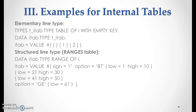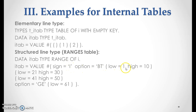Continuing with the VALUE operator for ranges table: ITAB = VALUE #( sign = 'I' option = 'BT' ( low = 1 high = 10 ) ( low = 21 high = 30 ) ( sign = 'I' option = 'GE' low = 61 ) ). This is how we write ranges table values in 7.40.